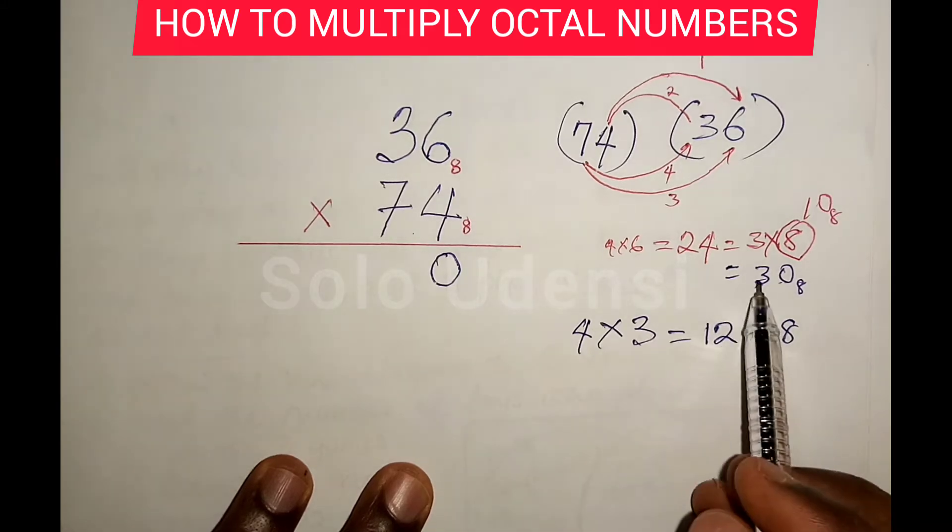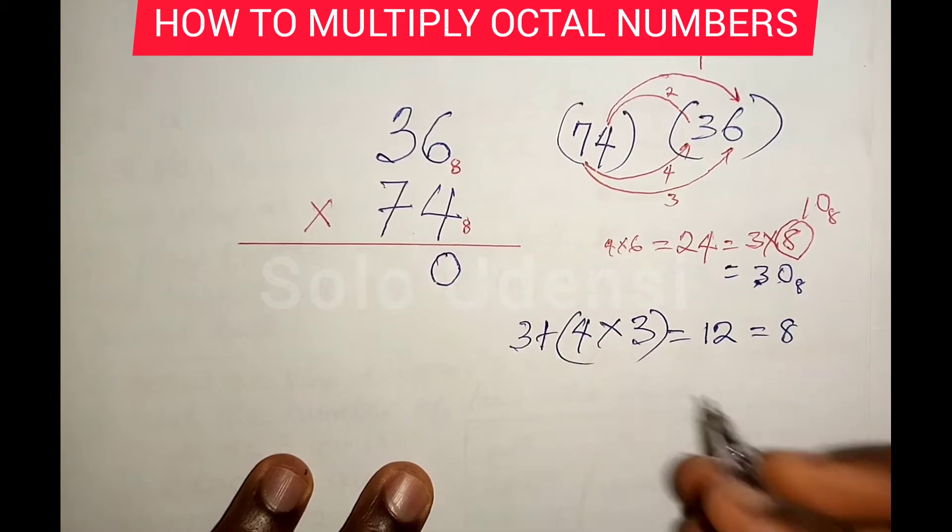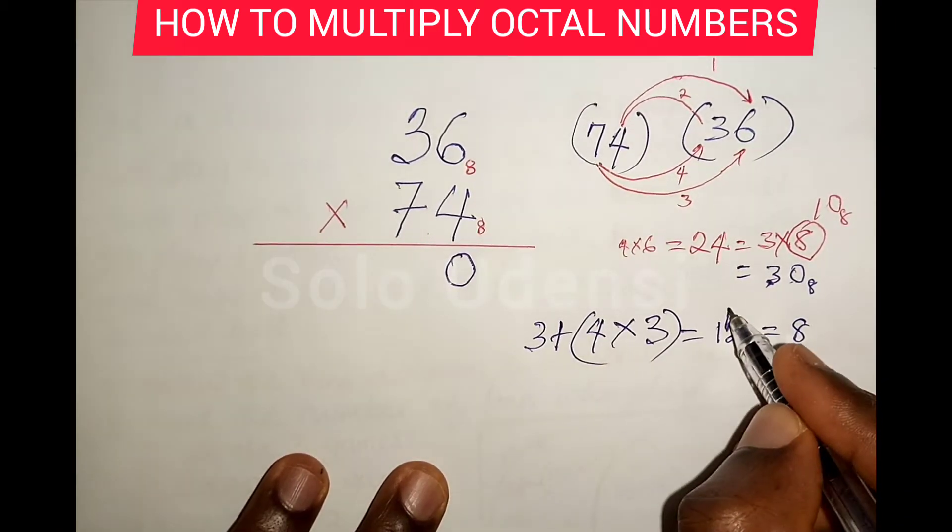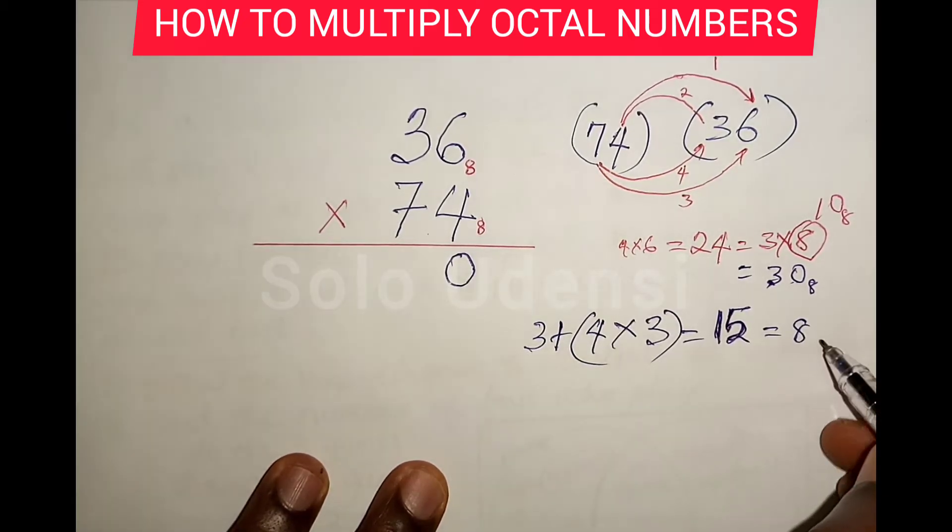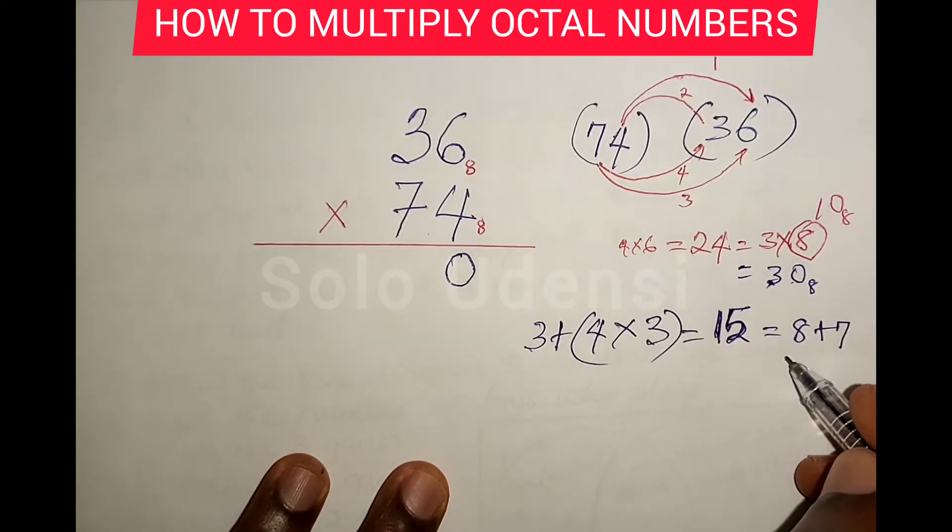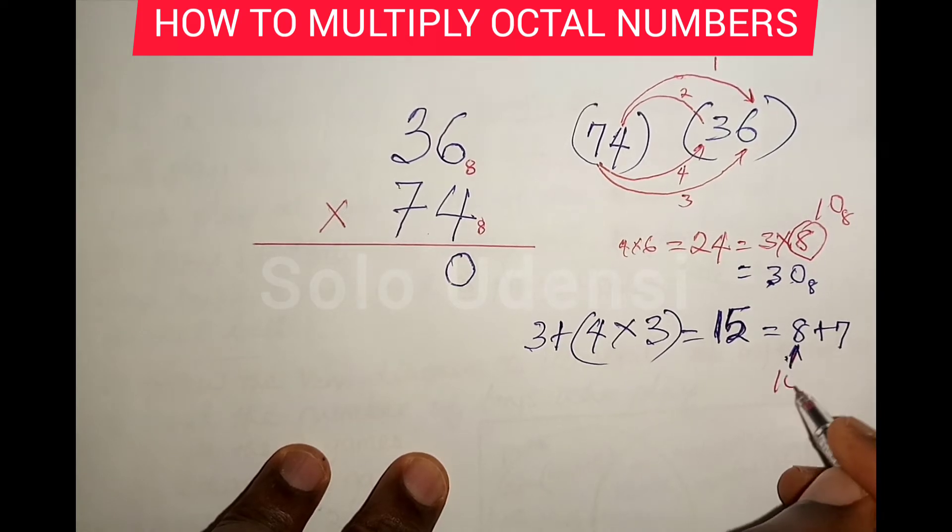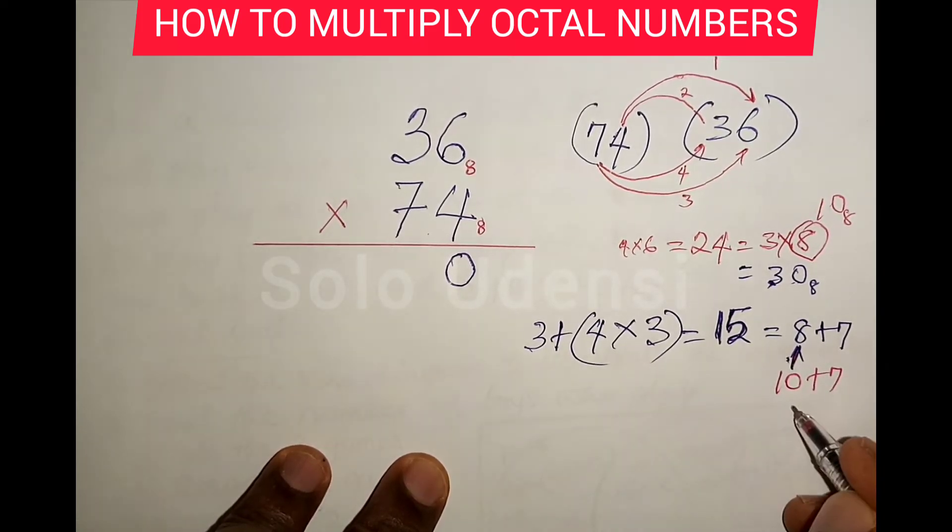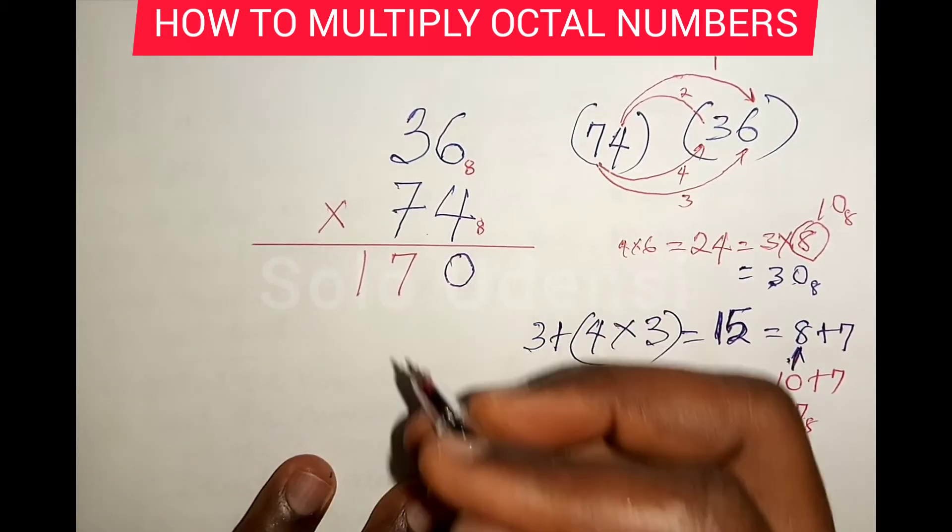Four times three is twelve plus three, that is fifteen. Fifteen is eight plus seven. So what we have now is there is no eight in base eight. Eight is one zero plus seven. So we have seventeen base eight. So we write seven, carry one. So nothing has to multiply, you write one.